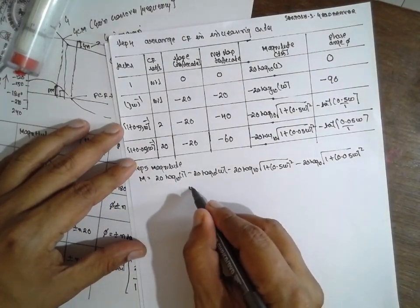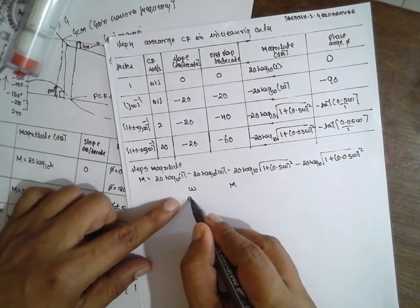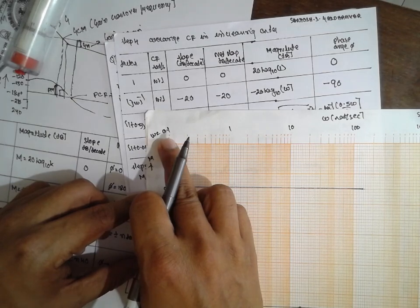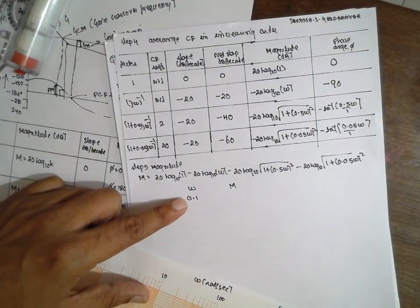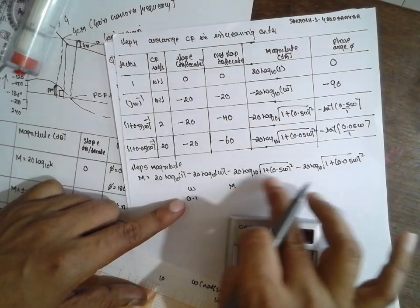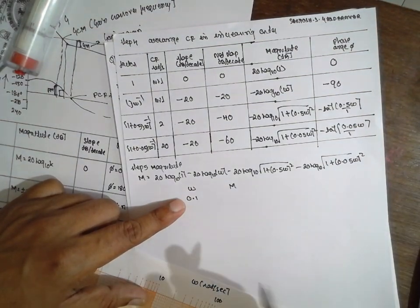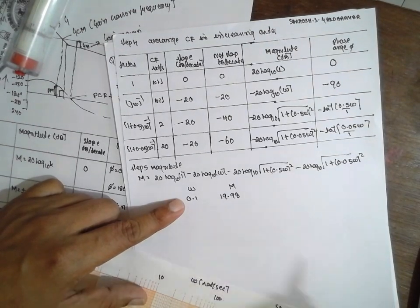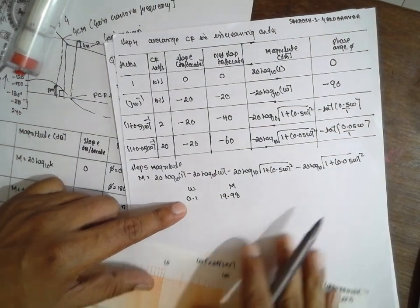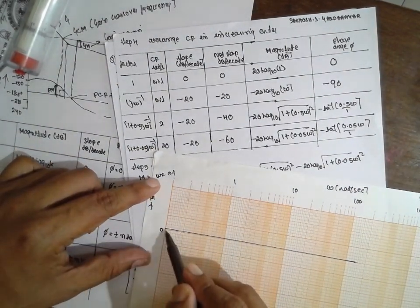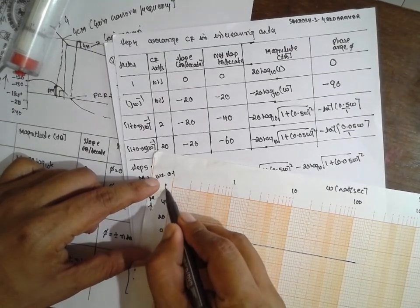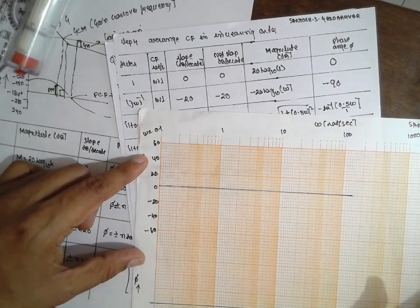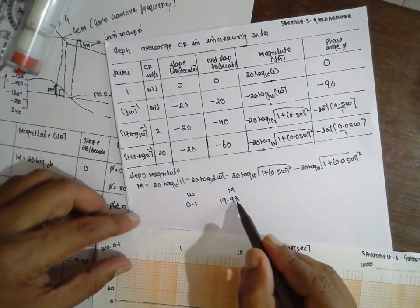I am using a shortcut method for drawing the table. Consider omega and magnitude columns. For omega = 0.1, I have taken this starting value because in the semi-log sheet I consider 0.1 as the starting value. Substituting 0.1 in place of omega, you get a value of approximately 19.98, which is approximately 20. The magnitude axis goes from minus 60 to plus 60.